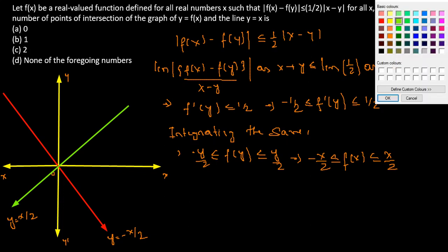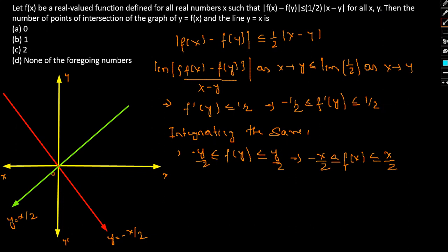And finally, what we will be having is our original line, that is, this one. The blue one will be y = x. So as we can actually clearly see, all these graphs basically intersect at the origin, at one particular point. Therefore, option B will be our answer.